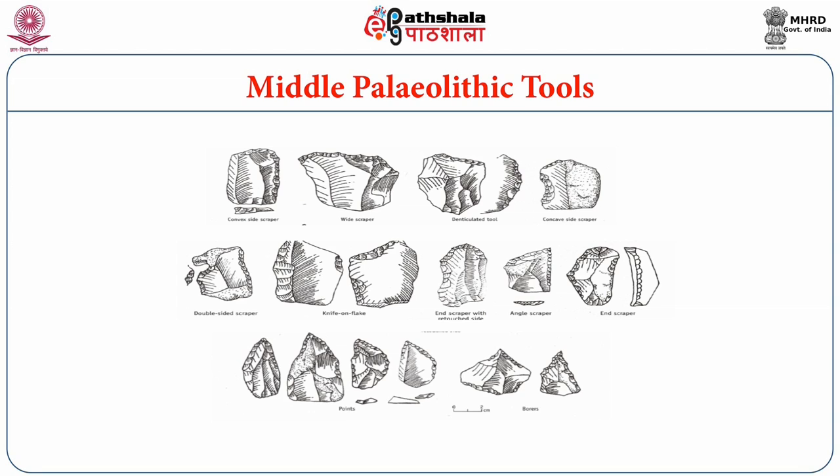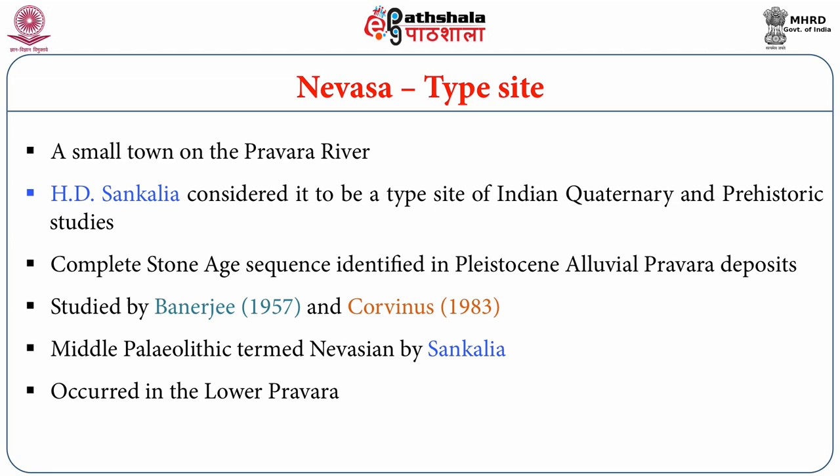These are examples of flake tools which include scrapers — single-sided scrapers, end scrapers, transverse scrapers, points, and double scrapers — made from flakes detached from larger cores using Levallois and Mousterian technology. The flakes were subject to secondary retouch, resulting in working edges along the sides of the flake. Navasa has been considered a type site in the study of Middle Paleolithic for a very long time in the Indian subcontinent.